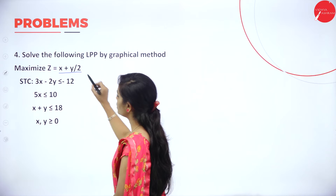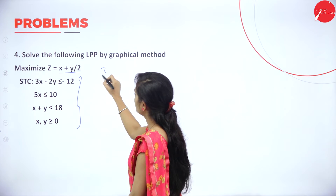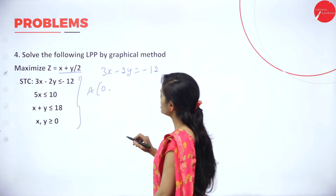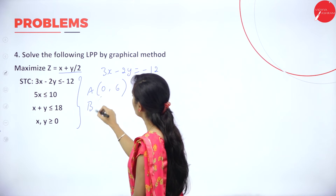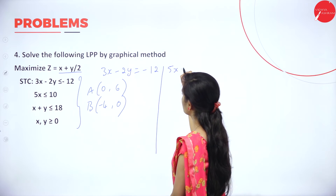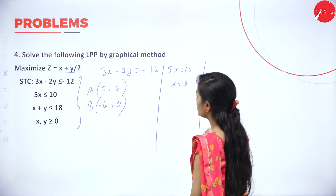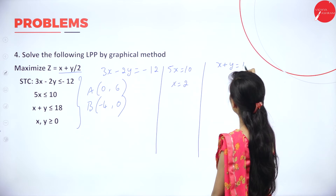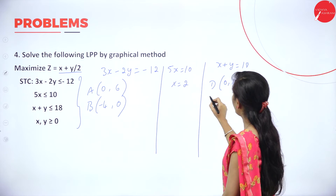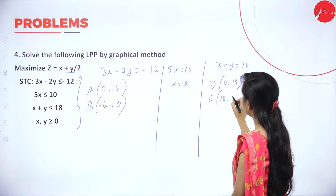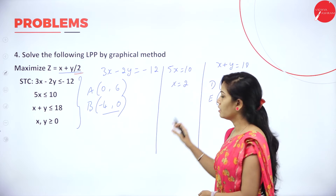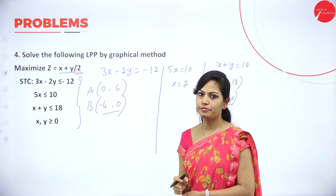The next problem: maximize Z equals x plus y divided by 2. We have three different constraints. The first: 3x minus 2y equals minus 12 — put x equal to 0, y equals 6; put y equal to 0, x equals minus 4. Second constraint: 5x equals 10, so x equals 2. Third constraint: x plus y equals 18 — put x equal to 0, y equals 18; put y equal to 0, x equals 18. First find the point values, then draw a graph. This is an assignment question for you.